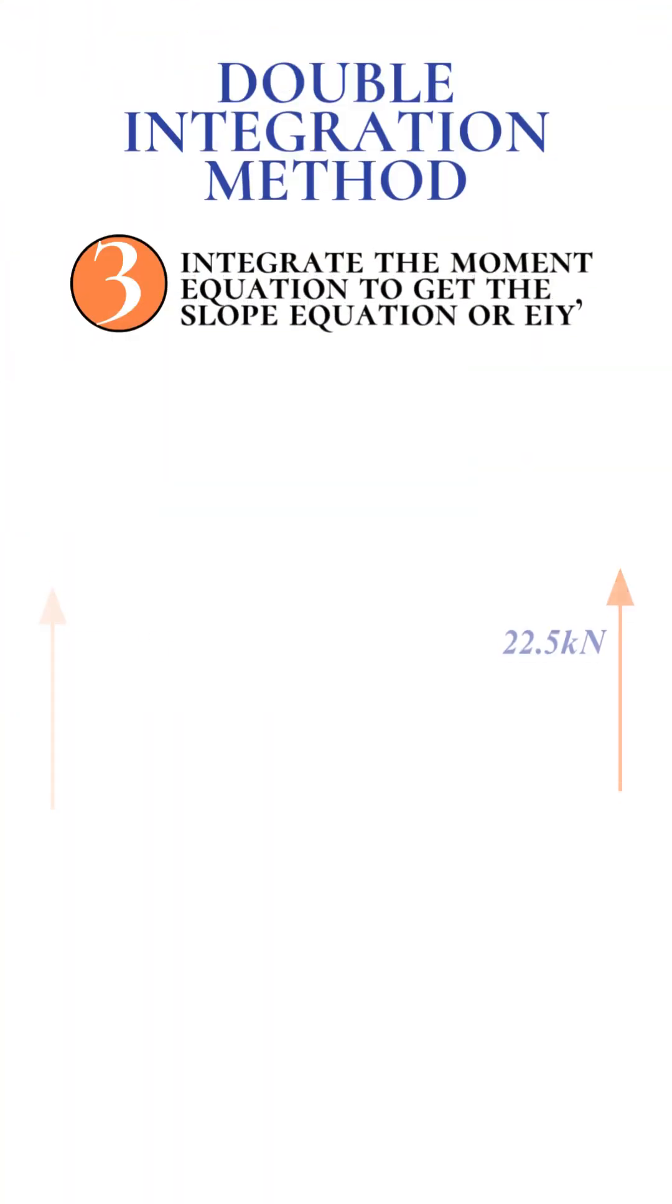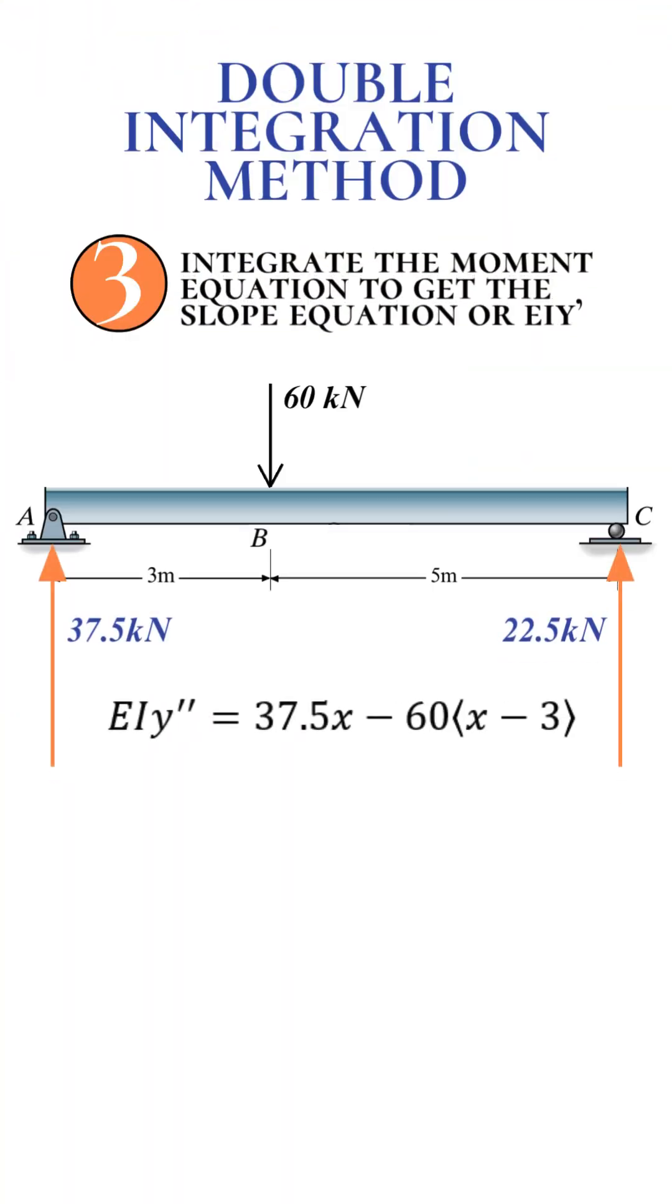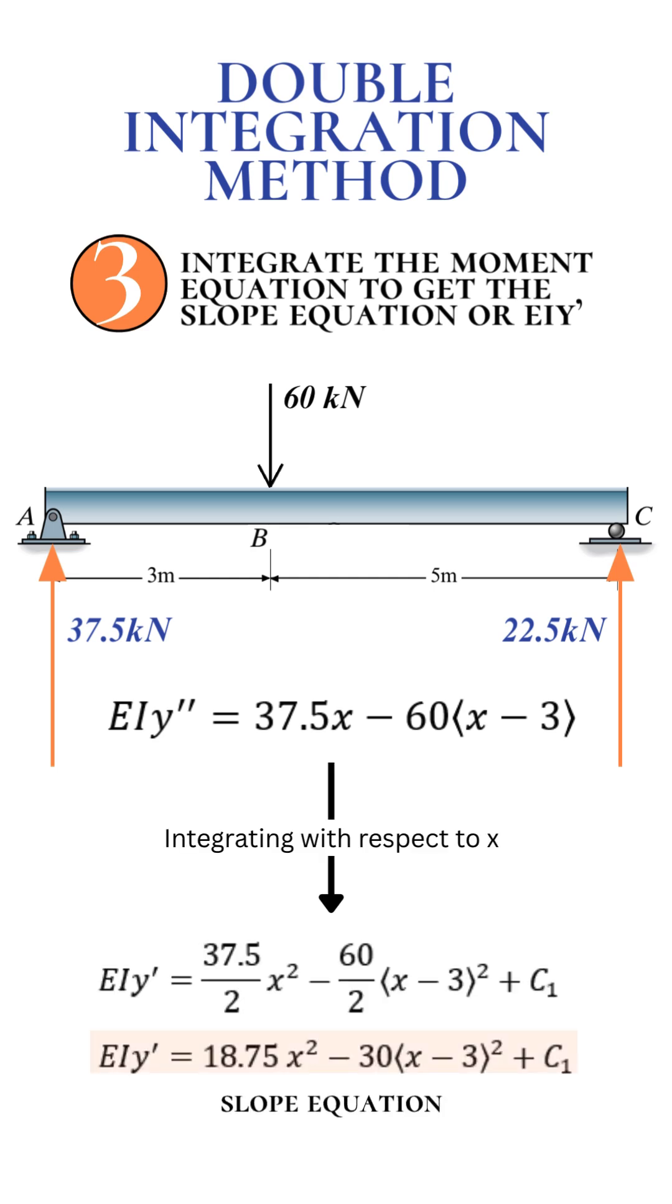Step 3: Integrate to find the slope equation or EIY prime. Now integrate the moment equation with respect to X to obtain the slope equation. Don't forget to include the constant of integration, C1.